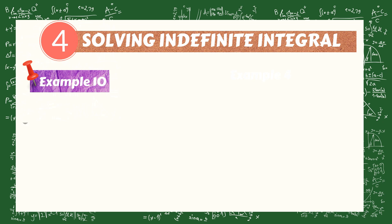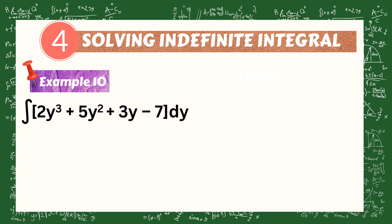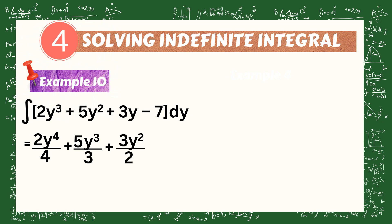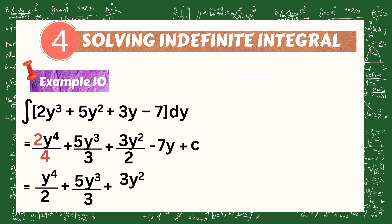How about this example? Integrate the quantity of 2y cubed plus 5y squared plus 3y minus 7, dy. We're going to integrate each term: 2y raised to the power of 4 over 4, plus 5y raised to the power of 3 over 3, plus 3y squared over 2, minus 7y, plus C.